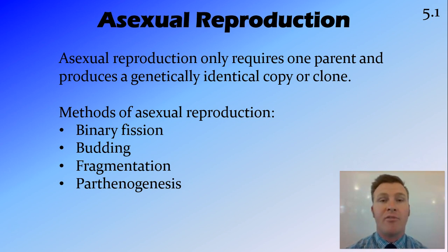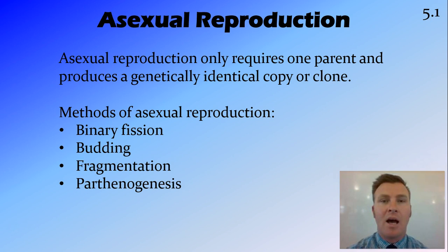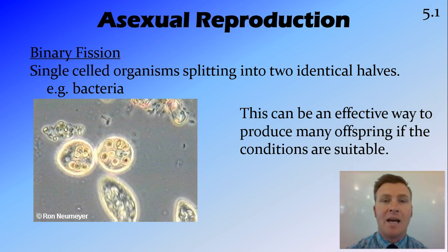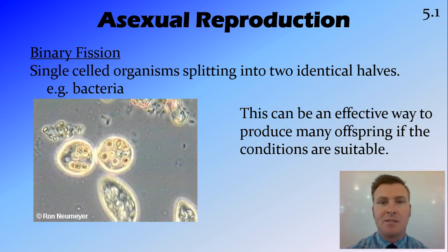There are a few different methods of asexual reproduction including binary fission, budding, fragmentation and parthenogenesis. The most simple form of asexual reproduction is binary fission. In this case, one organism replicates its DNA and then splits into two identical halves, and an example of this is bacteria.